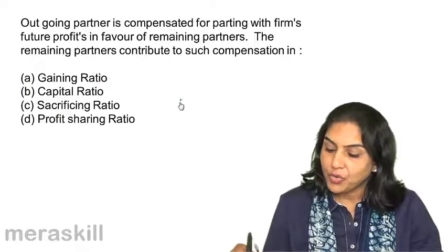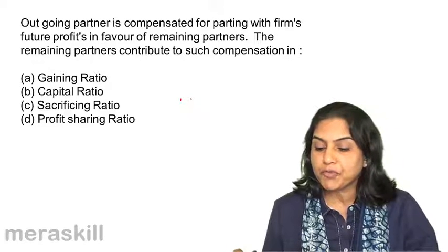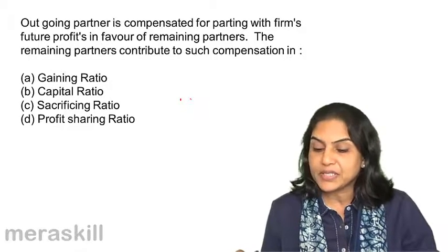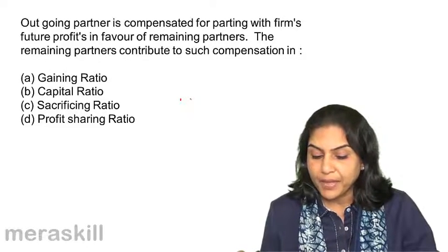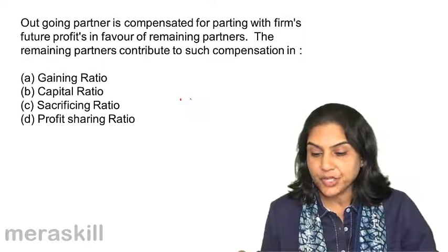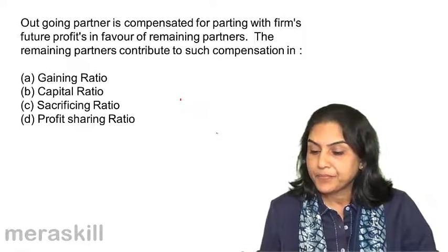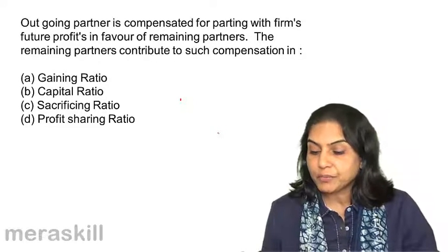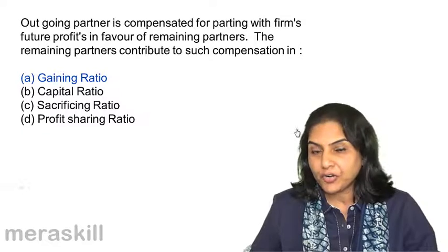The outgoing partner is compensated for parting with the firm's future profit in favor of remaining partners. The remaining partners contribute to such compensation in: A: Gaining ratio. B: Capital ratio. C: Sacrificing ratio. D: Profit sharing ratio. This is nothing but goodwill. The remaining partners will contribute in the gaining ratio.